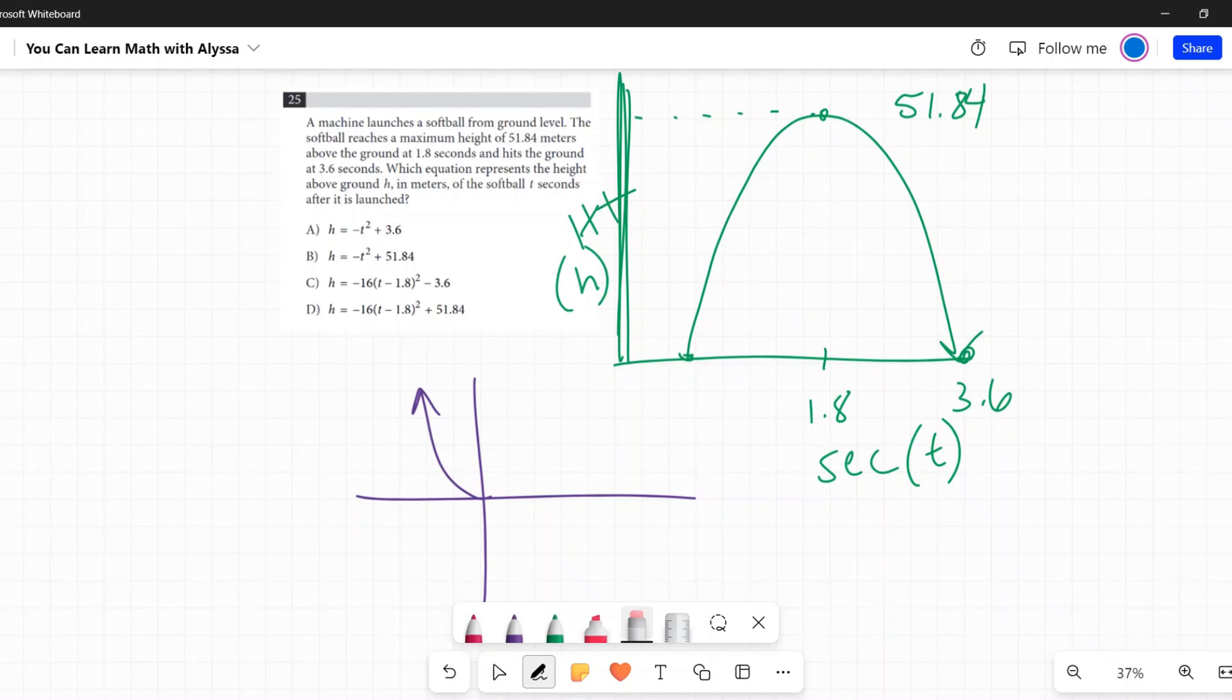Right off the bat I know it became a negative t squared. Then this negative t squared, where did its vertex move to? It went to the right 1.8 and it went up 51.84.